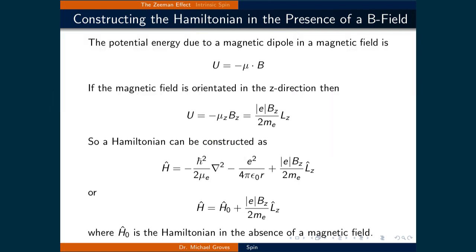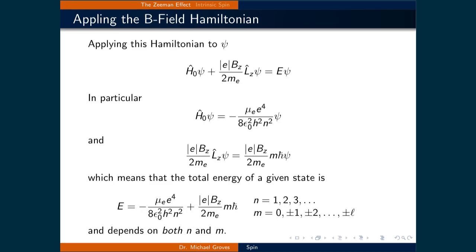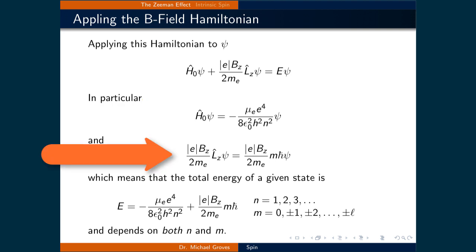This expression can alternatively be written as H-hat naught plus e times the magnetic field oriented in the z direction, divided by 2 times the mass of the electron, times the angular momentum operator in the z direction, where H-hat naught is the Hamiltonian in the absence of the magnetic field. Applying this Hamiltonian to psi means H-hat naught times psi plus e times B z divided by 2 times the mass of the electron, times the angular momentum operator z, applied to psi, is equal to E times psi. The first piece is when psi is operated on by H-hat naught, which returns the energy of the hydrogen atom. The second term has Lz operating on psi, which returns m h-bar times psi.